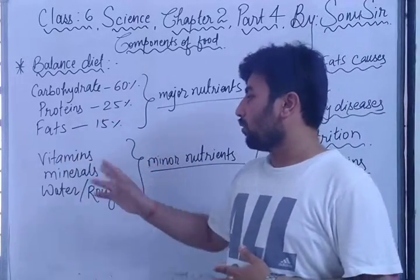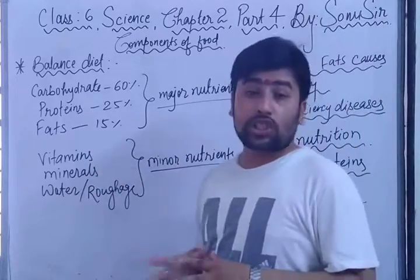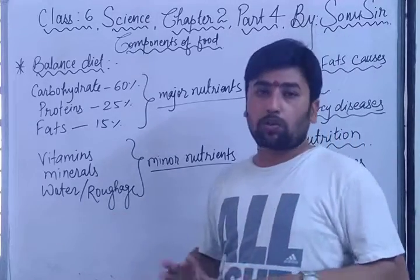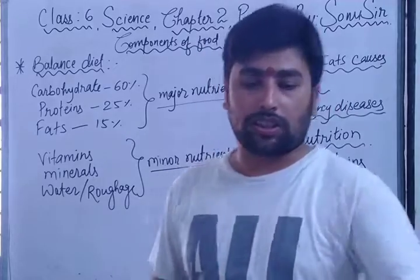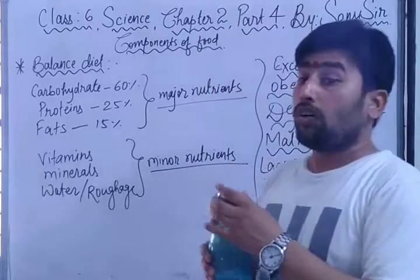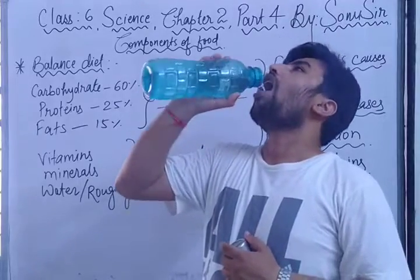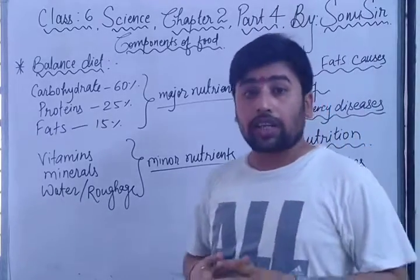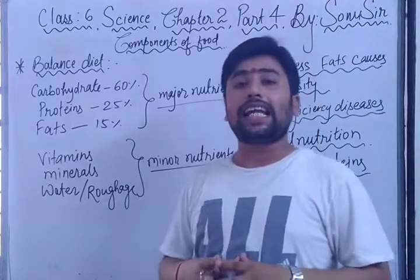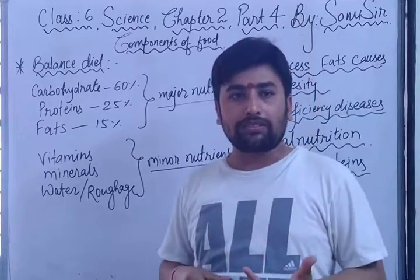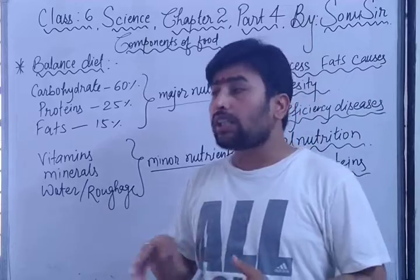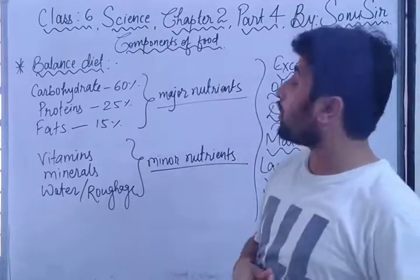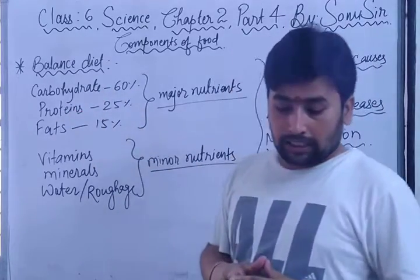Dear students, whenever we eat, we must keep in mind that we are getting all the nutrients. Vitamins come from vegetables. Minerals come from salt and water. We must drink water regularly — water is very necessary for our body. Roughage means salad items like tomatoes, onions, radish, and carrots. Roughage, minerals, vitamins, carbohydrates, proteins, and fats are all important.